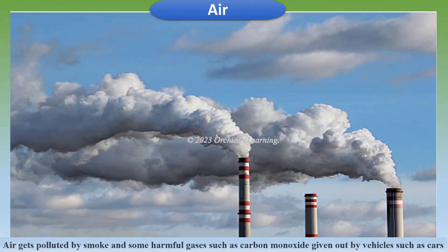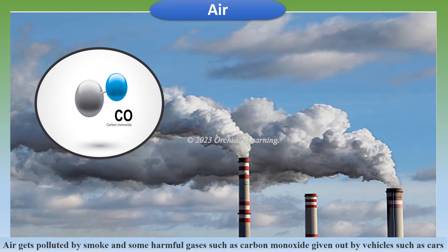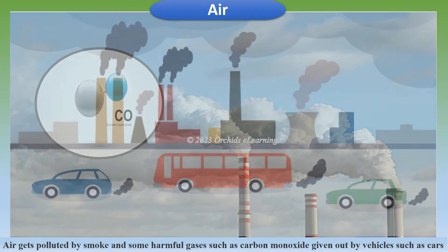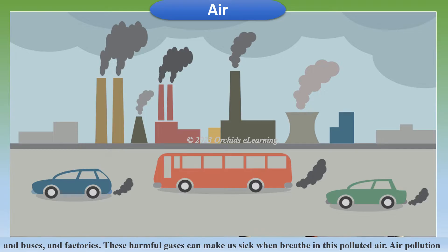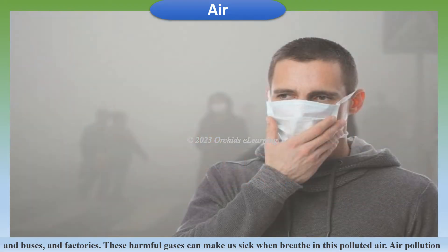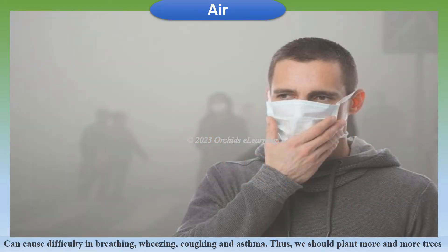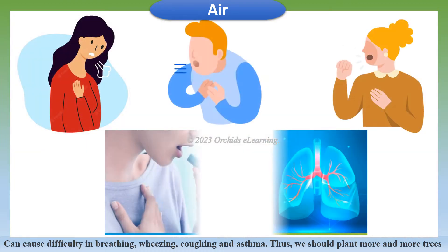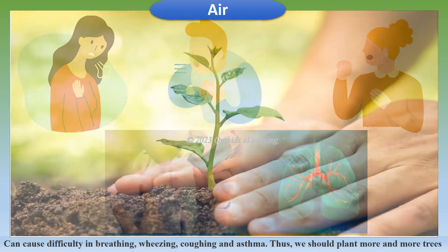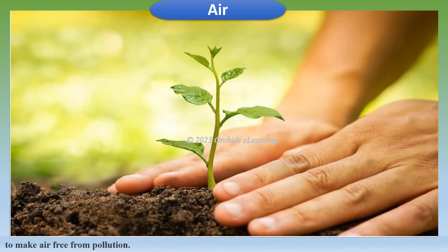Air gets polluted by smoke and harmful gases such as carbon monoxide given out by vehicles like cars and buses, and factories. These harmful gases can make us sick when we breathe in polluted air. Air pollution can cause difficulty in breathing, wheezing, coughing, and asthma. Thus we should plant more and more trees to make air free from pollution.